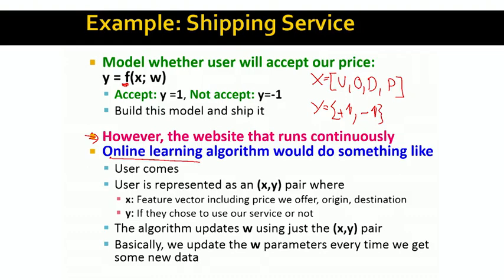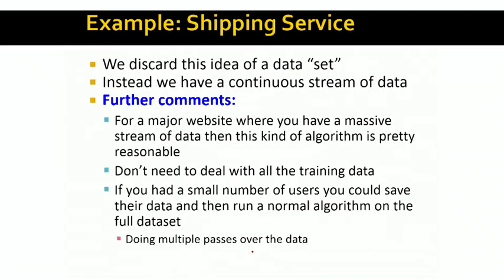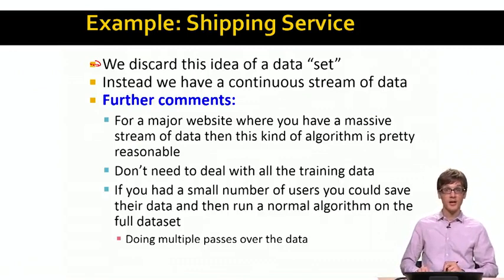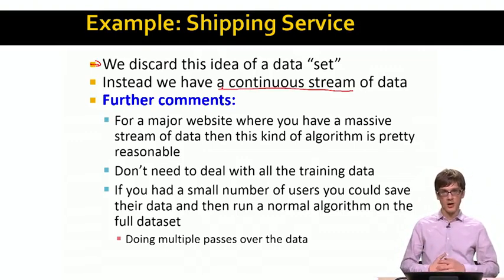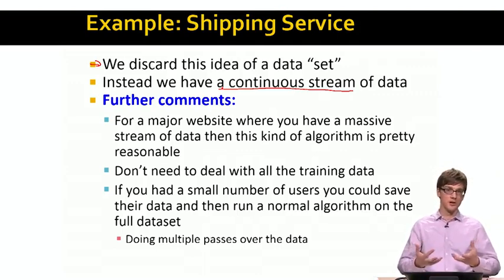The idea of the algorithm is as follows: a user comes to our store, we represent the user as an (x, y) pair where x are the features and y is whether the user chose our service or not. Based on the customer's decision, we update our weight vector w using just that one customer we saw. By making small updates to the parameter vector w, we slowly adapt to the changes in our customer base. Whenever a user comes to our store, if we correctly classified the user we are okay; if we misclassify the user, we update our model a bit — meaning did we suggest the price the user was happy with, or did we choose the wrong price?